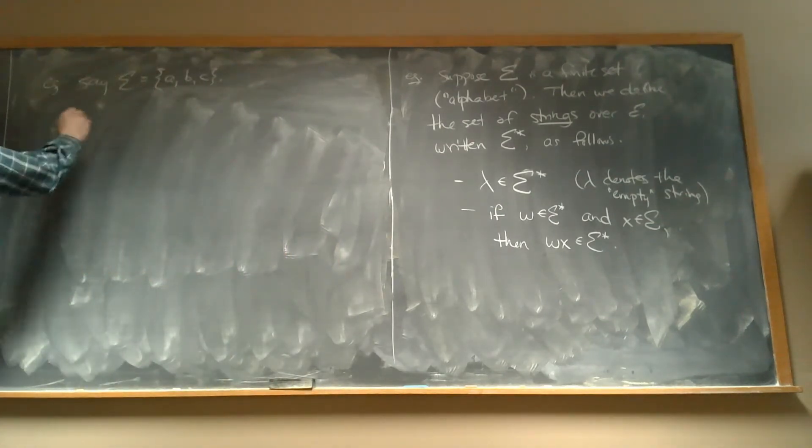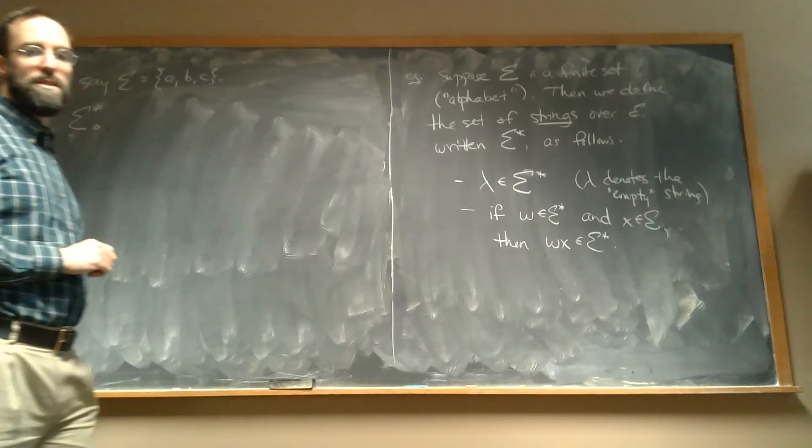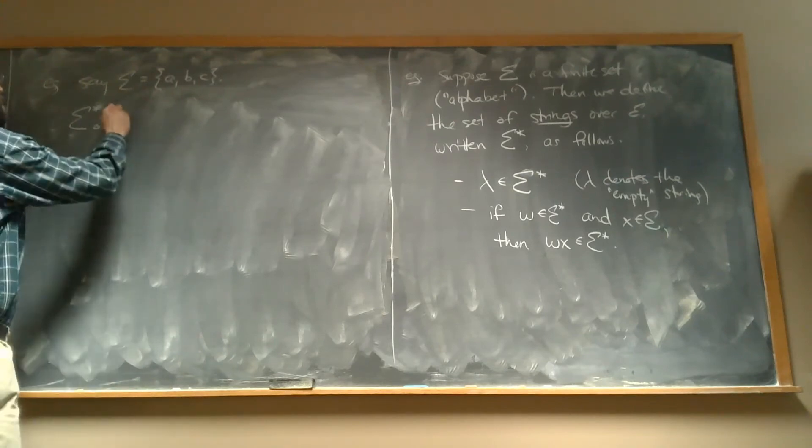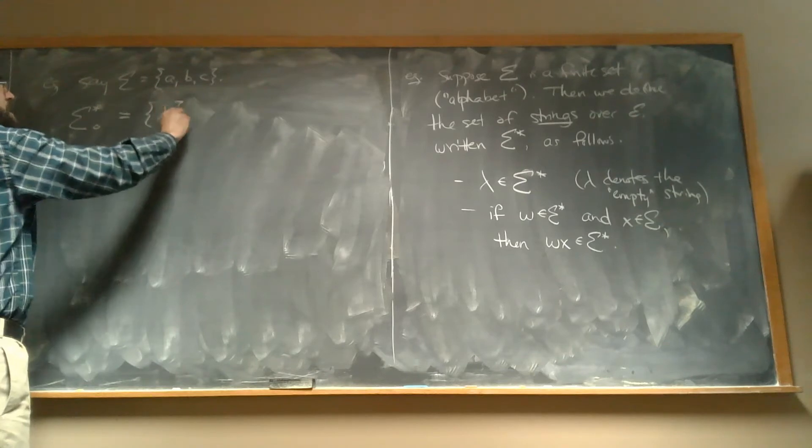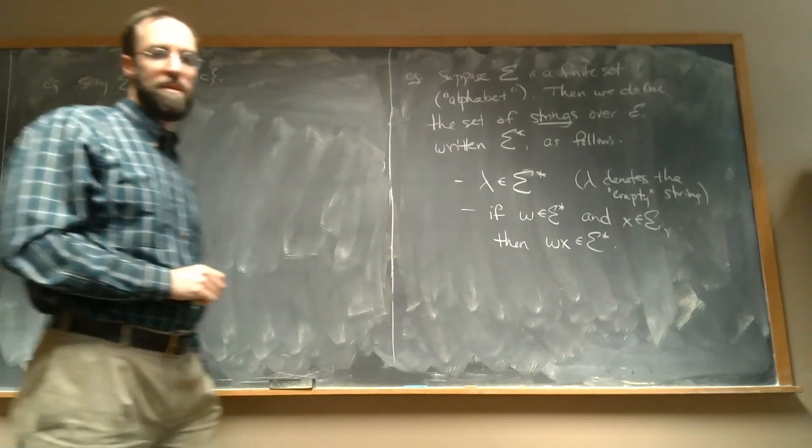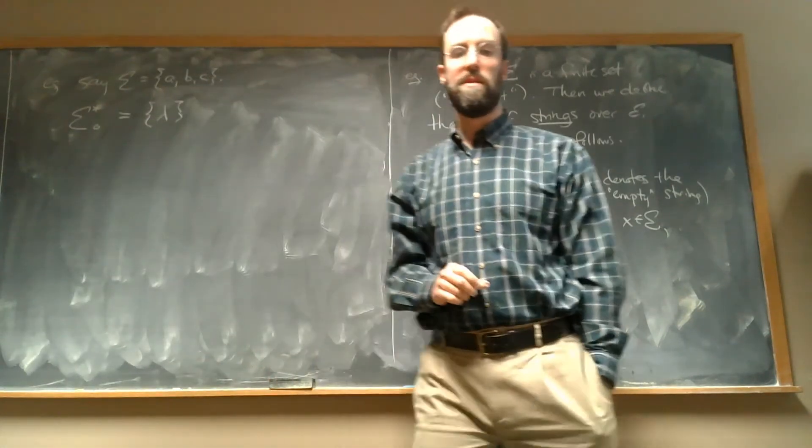So I'm going to write sigma star sub zero to denote this, kind of the stage zero. So sigma star zero is, the only thing in that set is the lambda, that's the empty string.